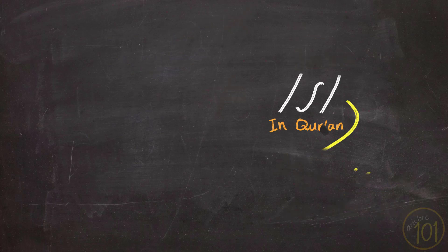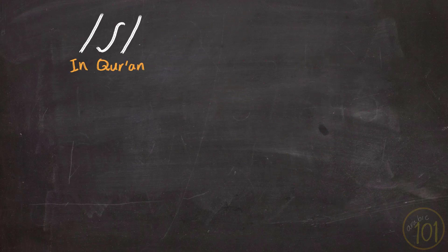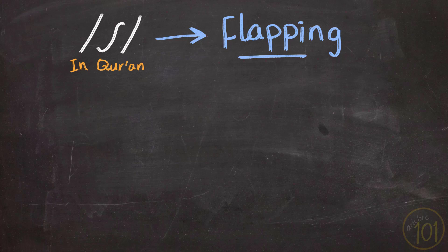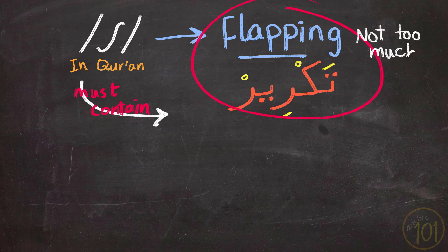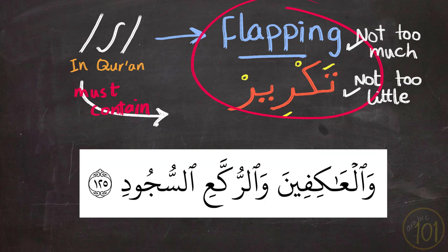The most important characteristic about the Qur'anic Ra is flapping. We also call it in Arabic takreer. Qur'anic Ra must contain a degree of takreer or flapping — not too much that it's too heavy to listen to, and not too little that the sound loses its characteristic. That would also be wrong. So listen to these examples to understand the point about takreer.